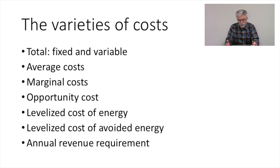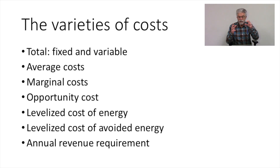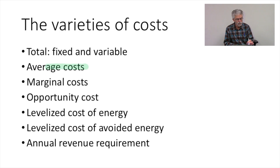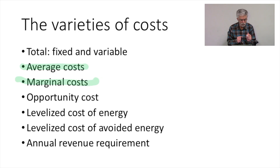Let's start with a list of the different varieties of costs that we're going to talk about. First, we're going to think about the total costs — the total cost of building and operating a power plant. So we have costs that are fixed and we have costs that are variable. We're going to take those fixed and variable costs and think about them in a number of ways. We're going to look at average costs — the costs for each unit of electricity we produce, or the costs for each hour of operation. We're going to think about the marginal costs, which is the incremental cost of adding one additional megawatt hour of output.